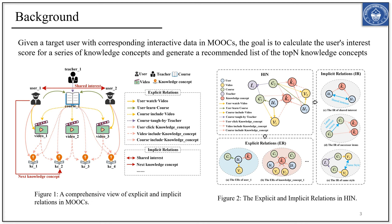Our task is to recommend knowledge concepts by using the interactive data between users and the MOOC platforms. However, existing methods overlook the implicit relations in interactions, such as shared interests and nested knowledge concepts, as shown in the figure. We make the case that using both explicit and implicit relations can significantly enhance the performance of recommendations.